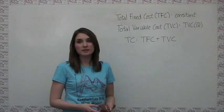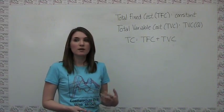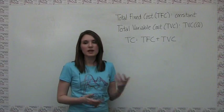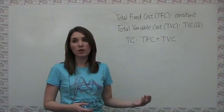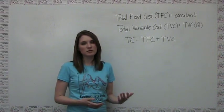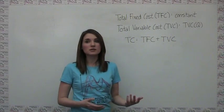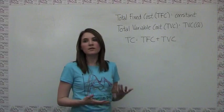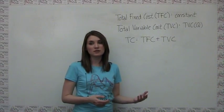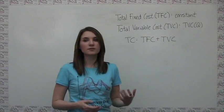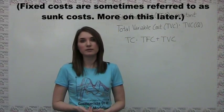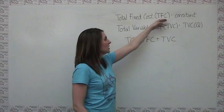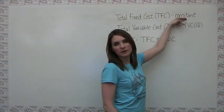Costs come in two different varieties: fixed and variable. Fixed costs are costs that are the same regardless of how much output a firm produces. In other words, fixed costs are independent of quantity. For example, a firm needs office space regardless of whether it produces one item or a thousand items, so office space can be thought of as a fixed cost. Fixed costs are incurred as soon as a firm decides to go into business and are present even if the firm doesn't produce anything and has a quantity of zero. We can represent total fixed cost, abbreviated TFC, as just some constant number that is not a function of quantity.